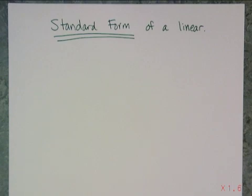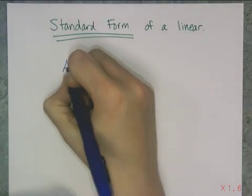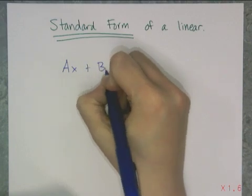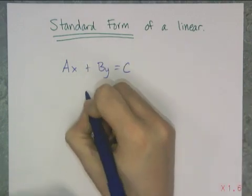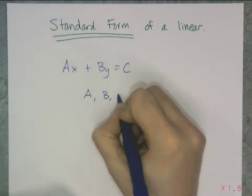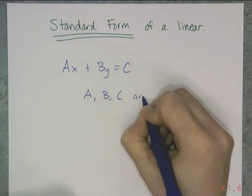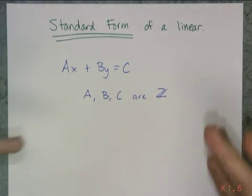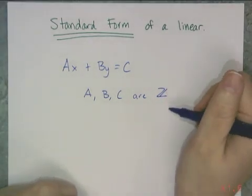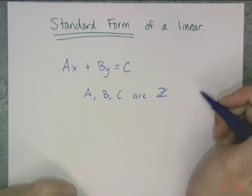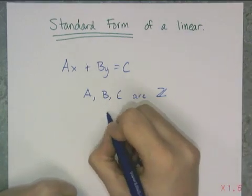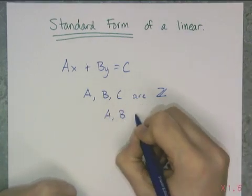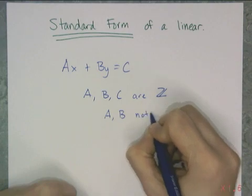Here's what standard form looks like. If I have more than two dimensions, I have more than two variables. It's ax plus by equals c, where a, b, and c are in algebra one integers. When you get out of algebra one, you can make them pi or whatever you want, but for algebra one they're going to be integers. Here's a criteria on a and b: a and b are not both zero.